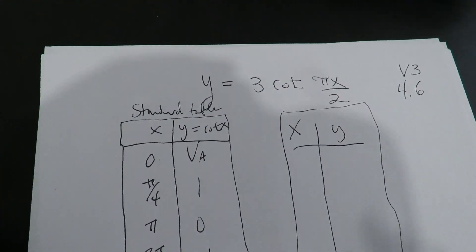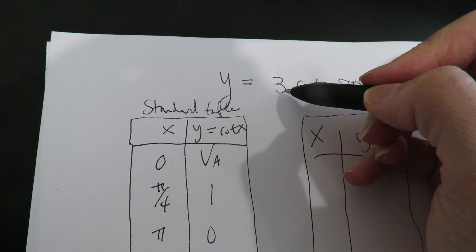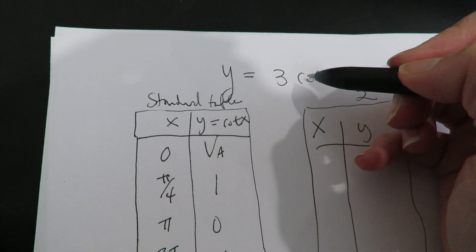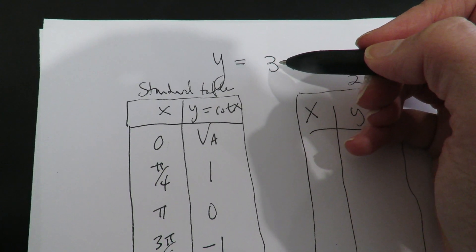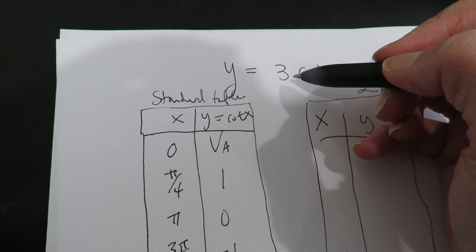The Y is always easier to do so let's start there. So everything in the Y column is 3 times larger because what comes out of the cotangent is going to be multiplied by 3.